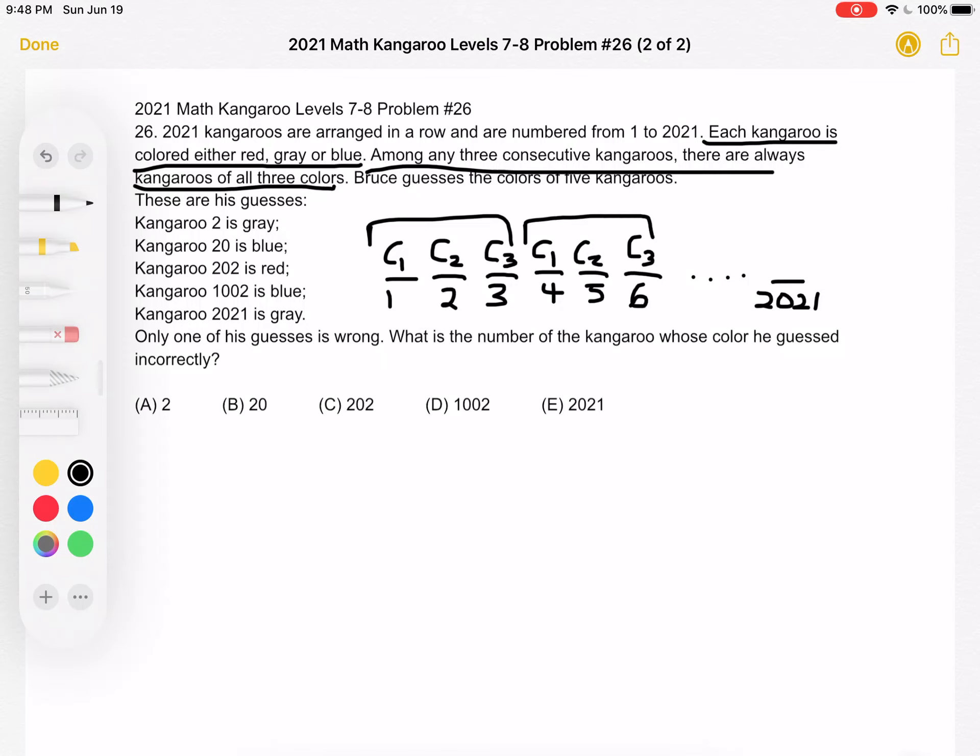And this is important because we can use Bruce's guesses and divide by 3 and find what the remainder is each time in order to figure out what his guess is for color 1 or color 2 or color 3. For example, his first guess is that kangaroo 2 is gray. So if we take 2 and divide by 3, the remainder is 2.